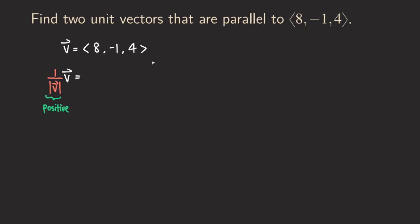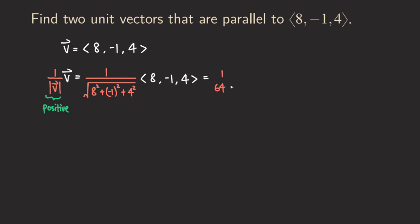So what we are going to do is find the magnitude first. That would be the square root of 8 squared plus negative one squared plus four squared. Then we multiply by the vector — so 8, negative one, and four. We just need to calculate the denominator: 64 plus one plus 16.